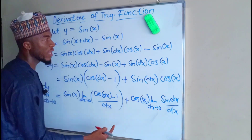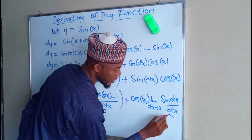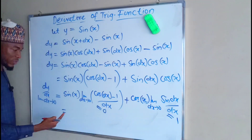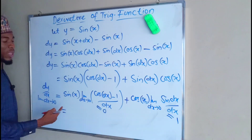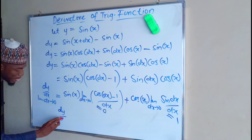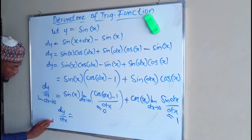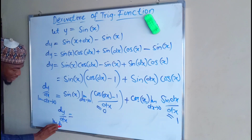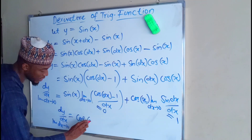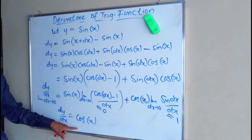And if you take dx to be equal to 0.001, you are going to obtain 1, so the whole of this becomes 1. And 1 times cos x is equal to cos x. The whole of this becomes 0 while the whole of this becomes 1, so 1 times cos x is cos x and 0 times sine x is 0. So finally, dy over dx as the limit of dx approaches 0 equals cos x. So this is why we have the derivative of sin x to be cos x.